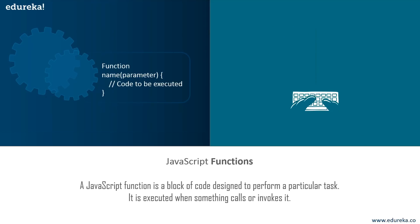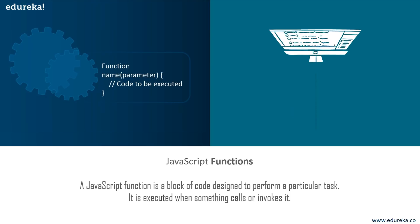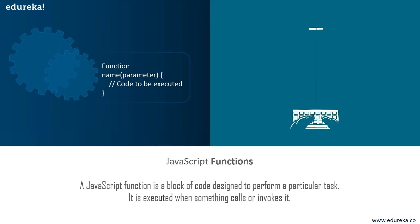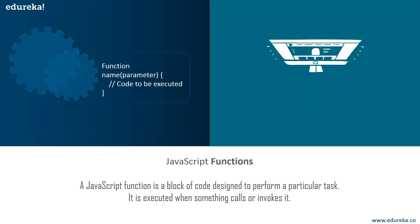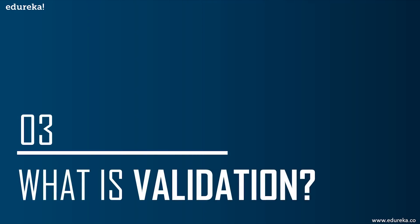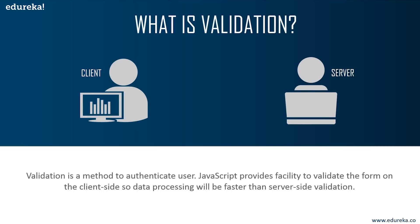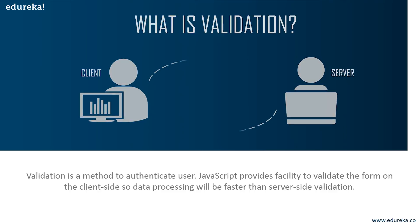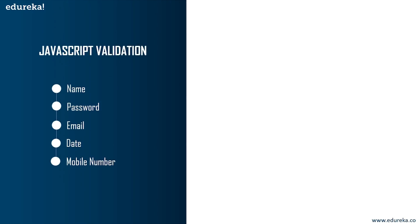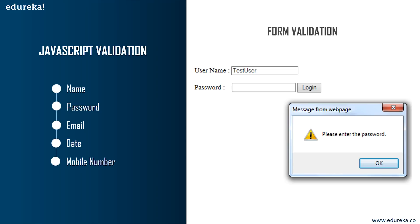You can also see the syntax for a function where you type the function name, provide your parameters, and then type your code to be executed. There are different functions you can use to perform any action in JavaScript. In a similar way, you can use a function to validate or authenticate any particular user. Now, validation is basically a method to authenticate the user. JavaScript provides the facility to validate the form on the client side, so data processing will be faster than server-side validation. Through JavaScript, we can validate name, password, email, date, mobile numbers, and more fields.